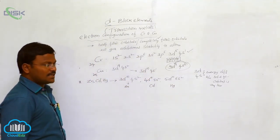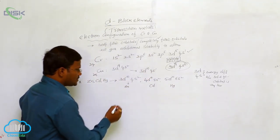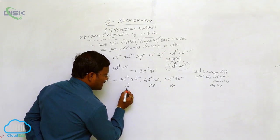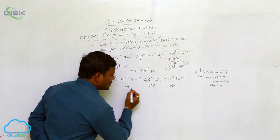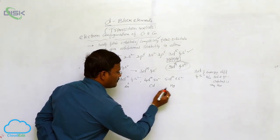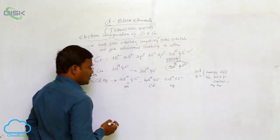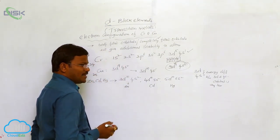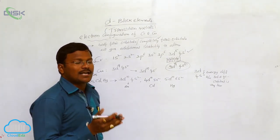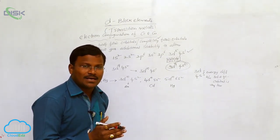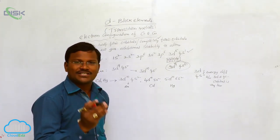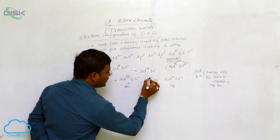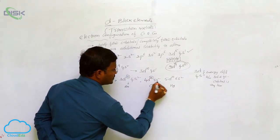These results tell us that, especially in the case of zinc, cadmium, and mercury, these elements in their atomic state or ionic state have completely filled d-orbitals.